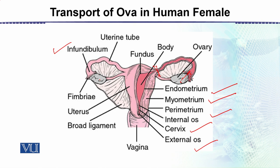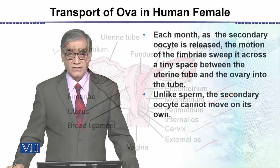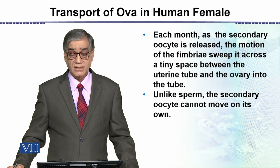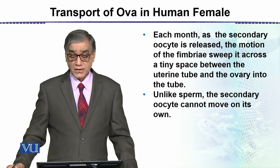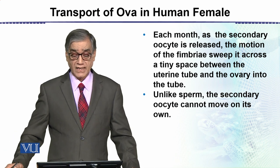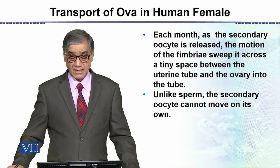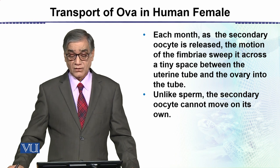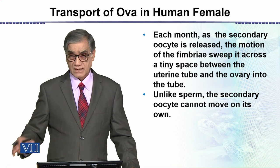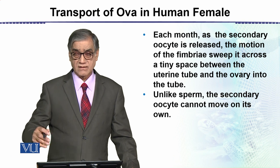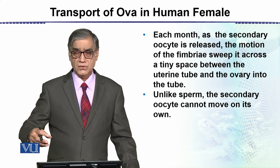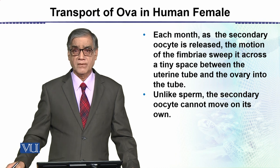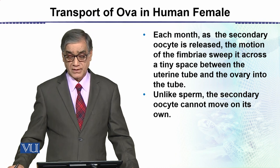Next is the vagina — the vaginal tube has the opening which is the vaginal opening. Now, each month as the secondary oocyte is released, the motion of the fimbria sweeps it across a tiny space between the uterine tube and the ovary into the tube.